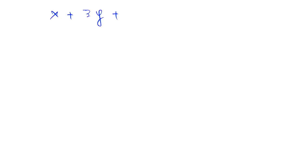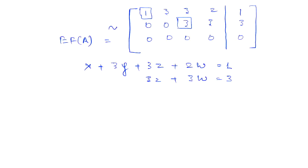Now we use the echelon form to write the solution of the system of linear equations. For that, we have to convert it again in the form of a system of linear equations. And we use the variables x, y, z, and w. We can see that y and w are free variables. There is no pivot corresponding to those columns.